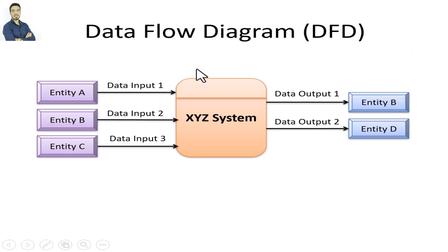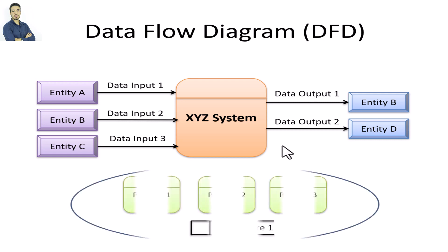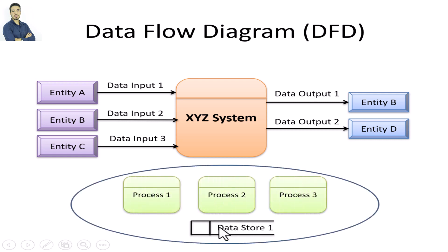The diagram in front of us right now is a context diagram. In a context diagram we have external entities, the main process (also called process zero), and data flows. In a context diagram I will not have any data store.